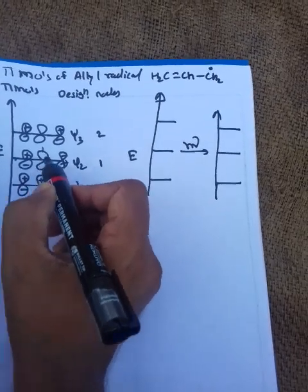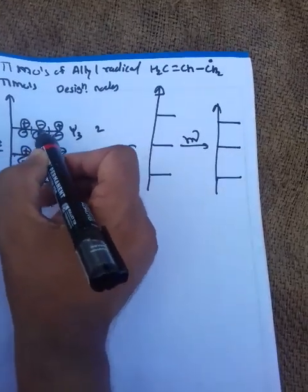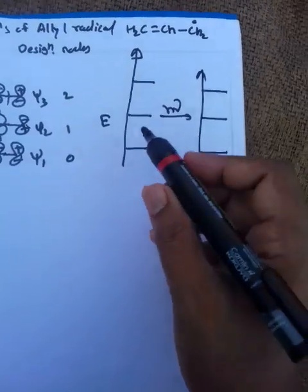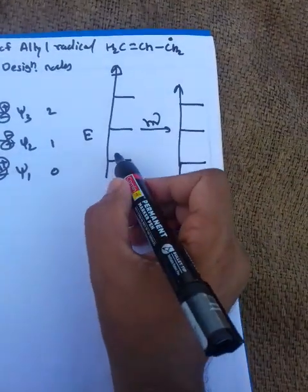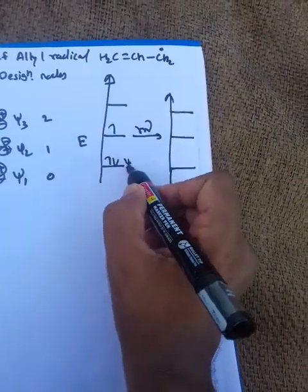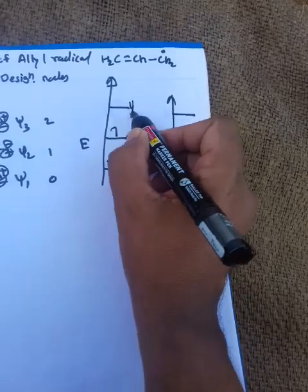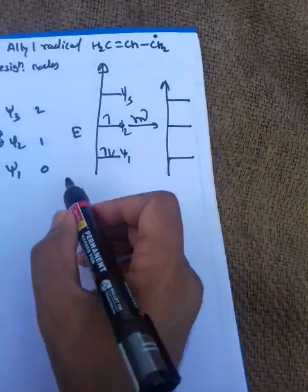This is a node present in the middle, and there are two nodes in psi 3. So in the allyl radical there are three electrons. These electrons lie in psi 1, psi 2, and psi 3 in the ground state.